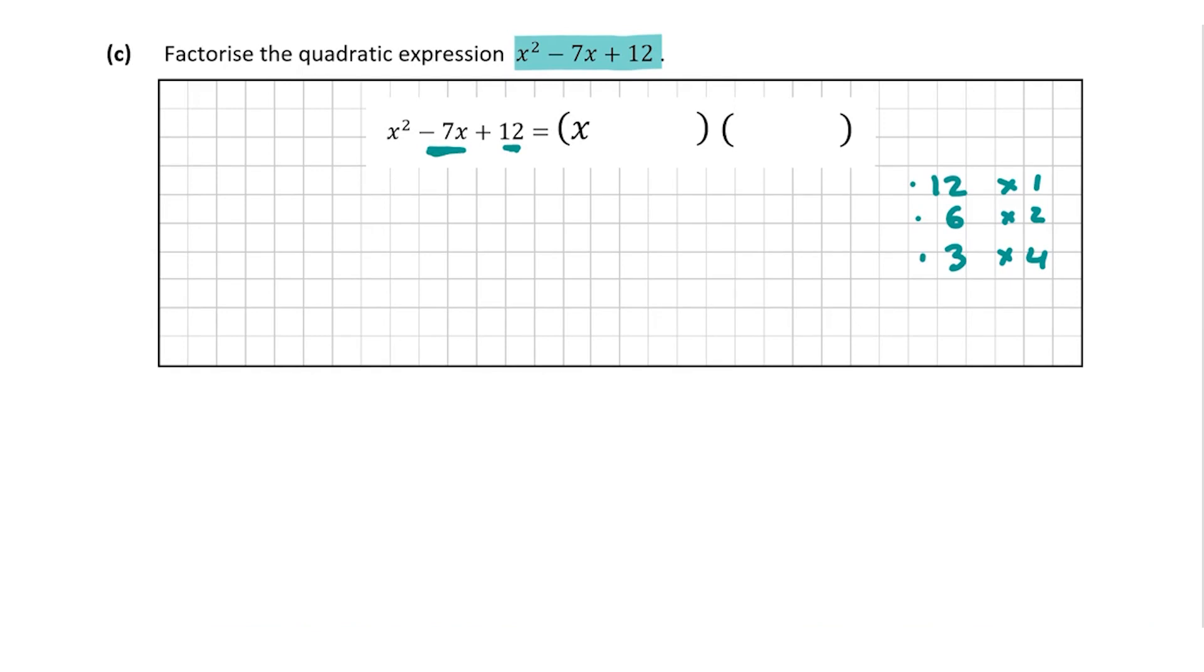So 3 times 4 gives us 12 but so does minus 3 times minus 4, because two negatives give a positive. But minus 3 minus 4 is going to give us minus 7x. So this is my chosen pair, minus 3 times minus 4. So I'm going to replace minus 7x by minus 3x minus 4x and I'll show you now where to go from there.